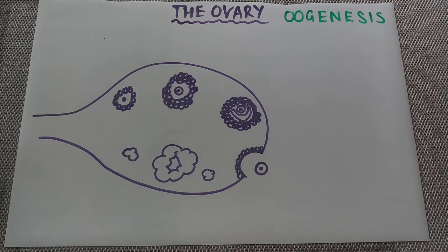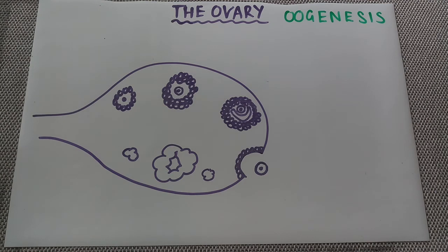In this video we're going to have a look at the ovary. We're going to annotate all of the different parts that are inside of the ovary, and we're going to do a brief overview of the process of oogenesis, so the formation of egg cells.